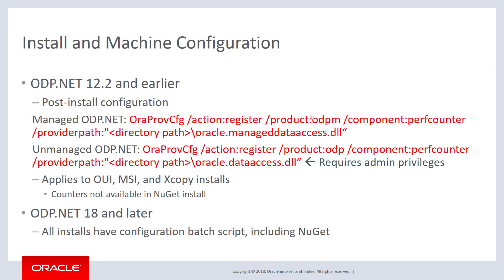For Managed ODP.NET, ODP.NET is the name used in the command, and you configure the performance counters and provide the path to the Managed ODP.NET assembly. For Unmanaged ODP.NET, ORAProvConfig is very similar, but uses ODP instead of ODP.NET and references the unmanaged assembly. Note that ORAProvConfig requires admin privileges with Unmanaged ODP.NET because it makes registry changes, which require Windows Administrator privileges. This applies to OUI, MSI, and XCopy installs only — these counters are not available for NuGet because ORAProvConfig is not included with NuGet installs.